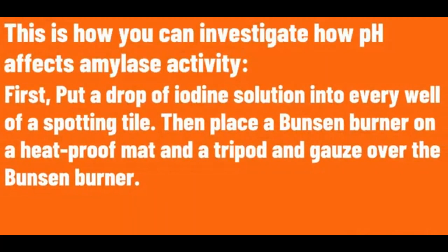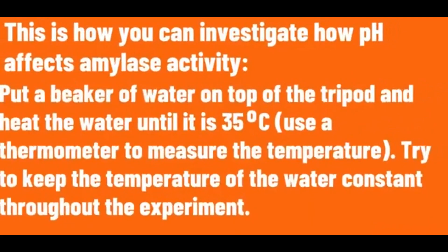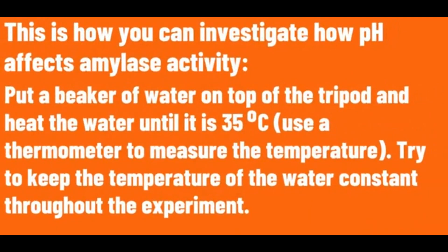This is how you can investigate how pH affects amylase activity. First, put a drop of iodine solution into every well of the spotting tile. Then place a Bunsen burner on a heatproof mat and a tripod and gauze over the Bunsen burner. Put a beaker of water on top of the tripod and heat the water until it is 35 degrees Celsius. Try to keep the temperature of the water constant throughout the experiment.